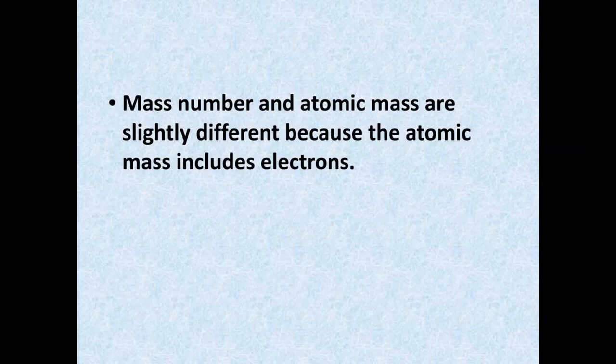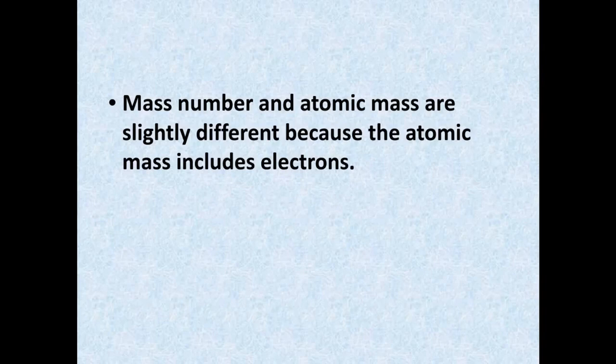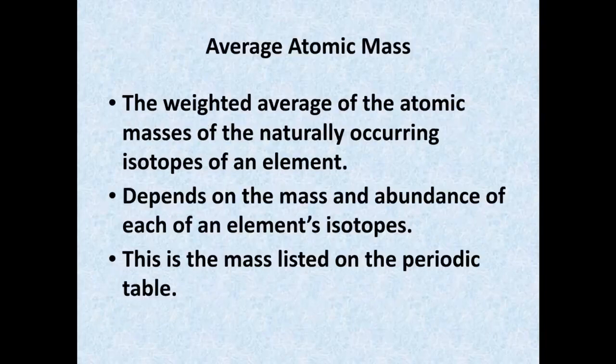The mass number and the atomic mass are going to be slightly different. The mass number is just adding the number of protons and neutrons, and this will be a whole number. Whereas the atomic mass is averaging the masses of the different isotopes, so this is where you get a decimal number, and this is what you see on the periodic table. That average atomic mass comes from the average of isotopes that occur in nature.